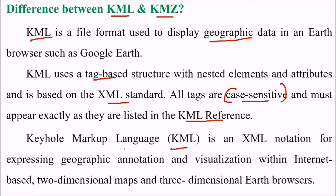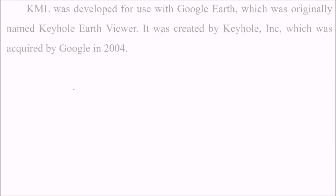KML, or Keyhole Markup Language, is an XML notation for expressing geographic annotation and visualization within internet-based two-dimensional maps and three-dimensional earth browsers.